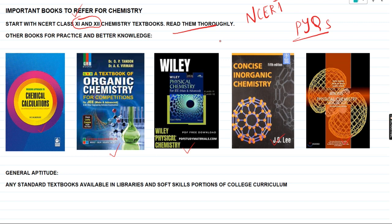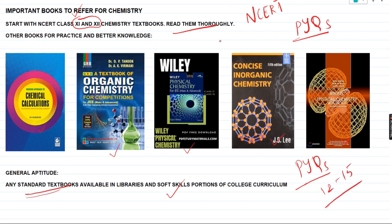Regarding general aptitude, I would suggest any standard textbooks available in libraries. General aptitude totally depends on the IQ level of the person. If your college degree curriculum includes soft skills, that is more than enough. Solve previous years' questions to gauge your level. In my opinion, you can easily score between 12 to 15 or even full marks in general aptitude — it should be fully scorable, like the icing on the cake.